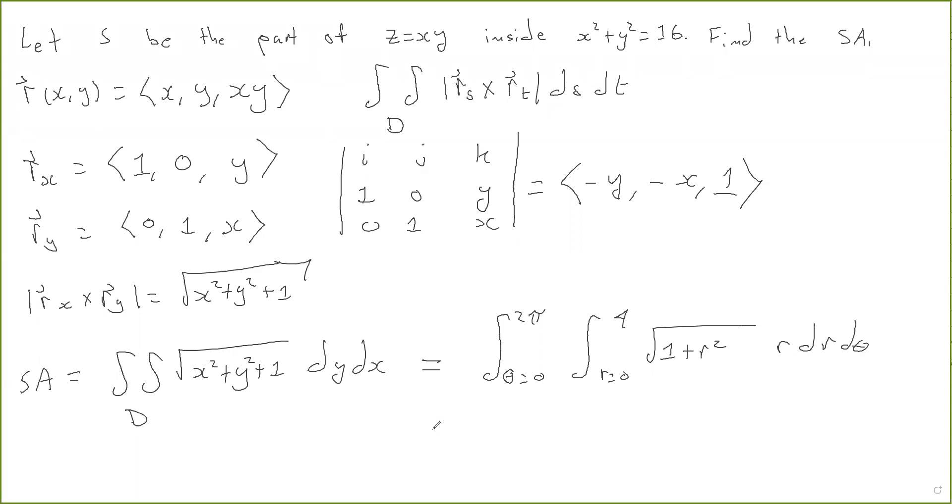Okay, you can do this using U substitution. The final answer is 2 pi over 3 times 17 to the 3 halves minus 1.